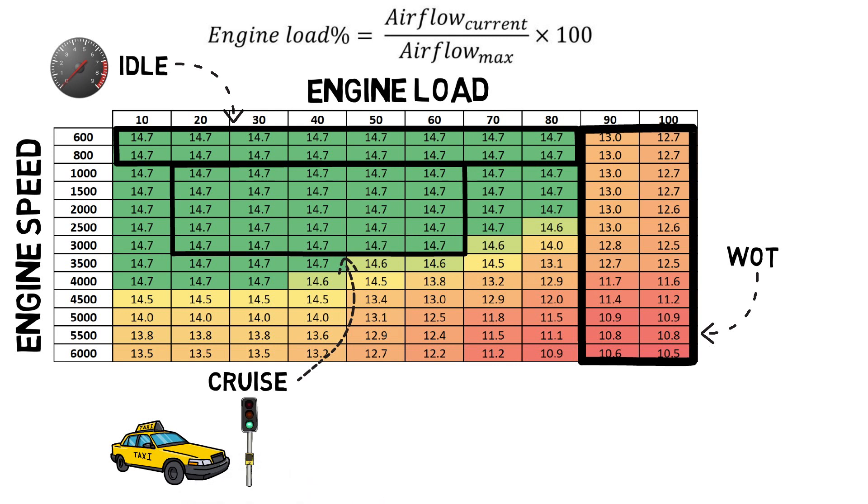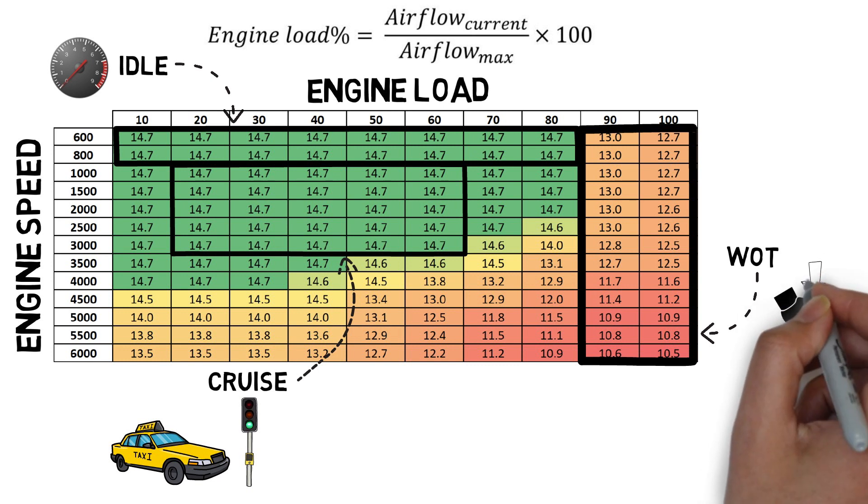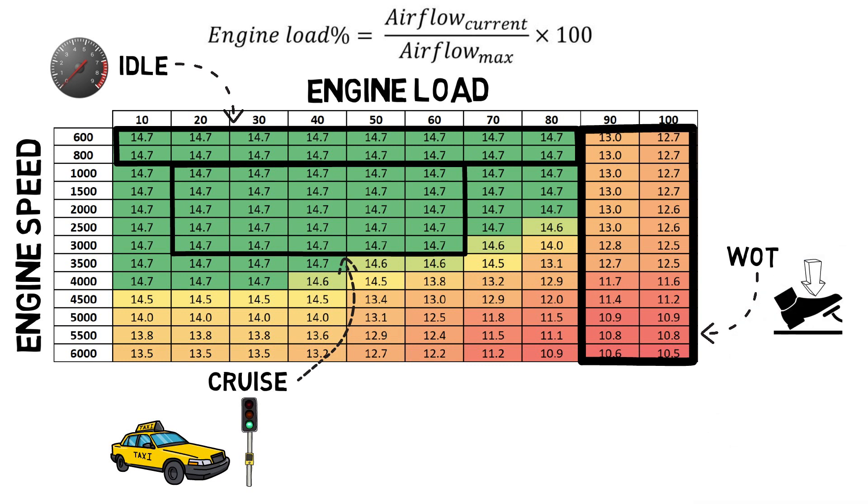Lastly, WOT is achieved by flooring the accelerator pedal such as when you try to pass another vehicle or climb a hill. As the name implies, during this condition throttle is fully open providing the least resistance to the incoming air and therefore has the highest load.